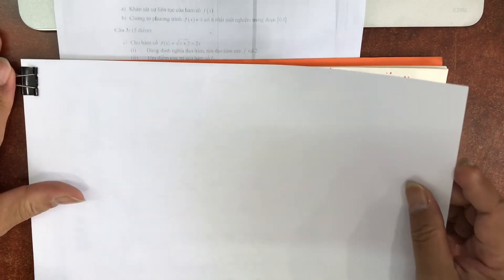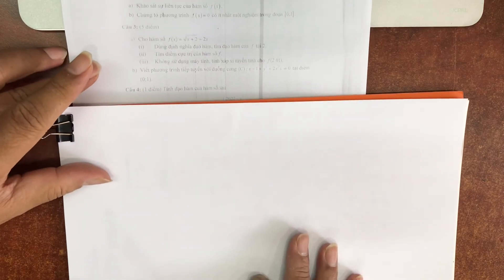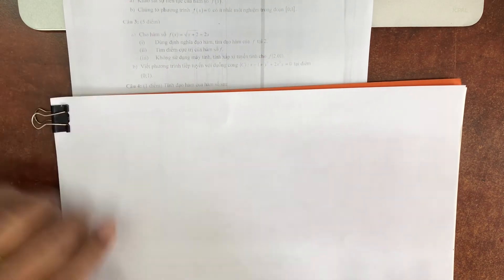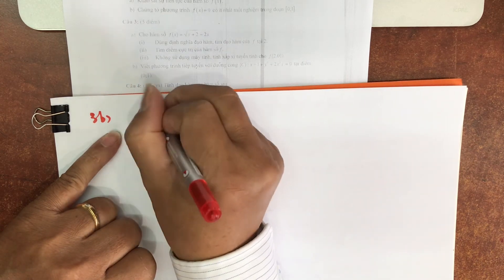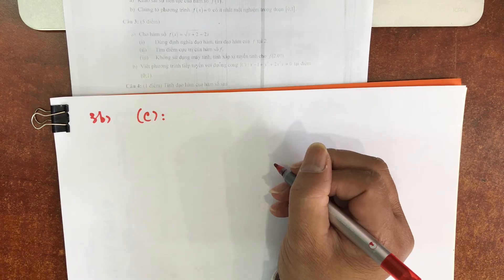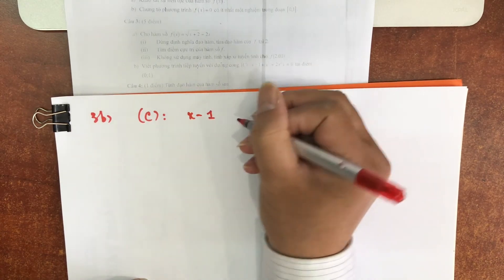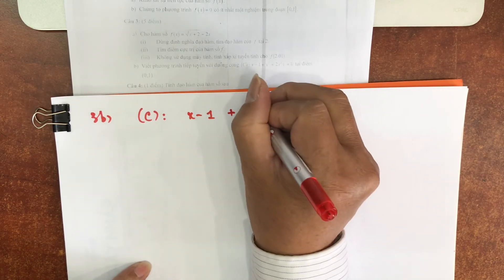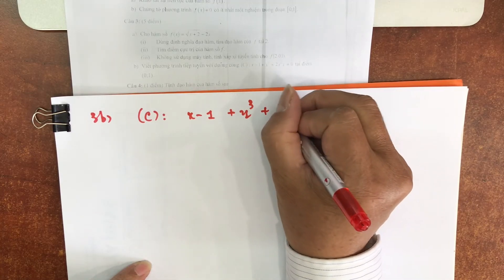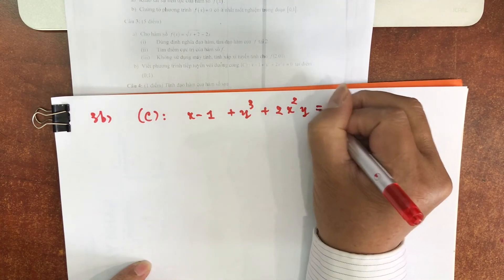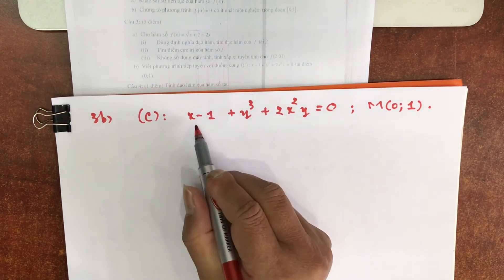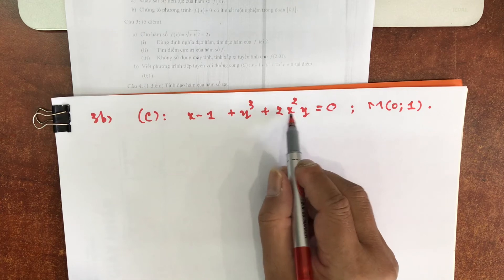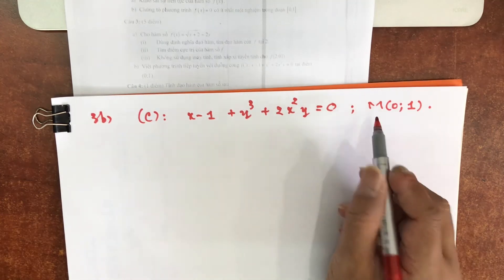Câu 3B coi như độc lập với câu A. Viết phương trình tiếp tuyến với đường cong C được cho dần ẩn: (x−1) + (y−3) + 2x²y = 0, tại điểm M(0,1). Đặt tên điểm đó luôn. Chúng ta thay x bằng 0 và thay y bởi 1 thử thì bằng 0. Thỏa, cho nên điểm này rõ ràng là điểm thuộc đồ thị C.